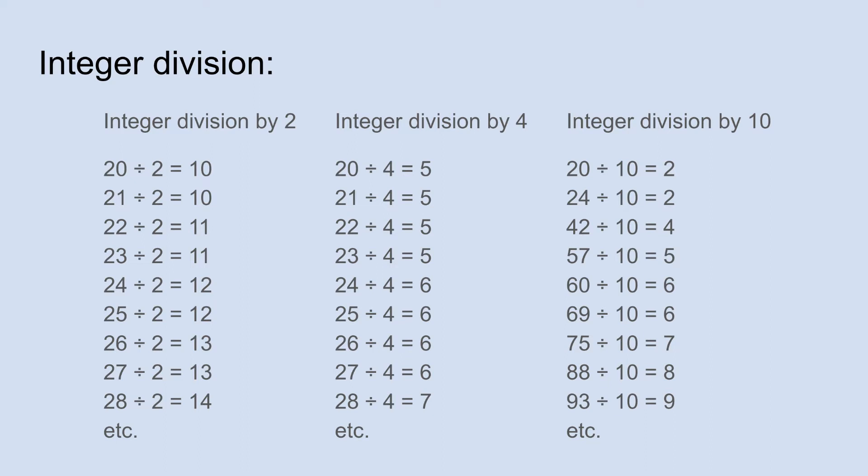Let's take a look at integer division first. Integer division basically means we're going to ignore the remainder. When you first learn division, you probably learned that there's a quotient and a remainder. In this case, we're just going to ignore the remainder.